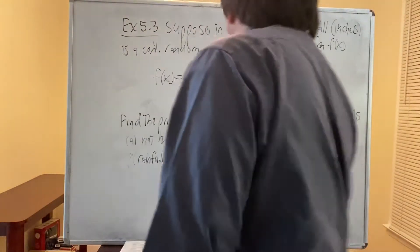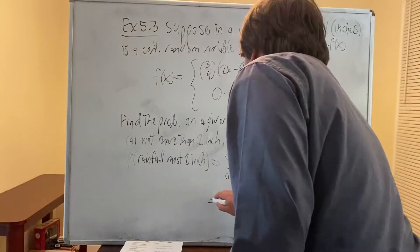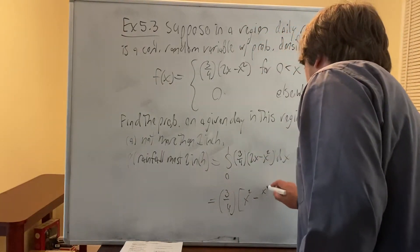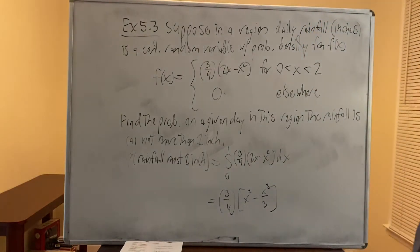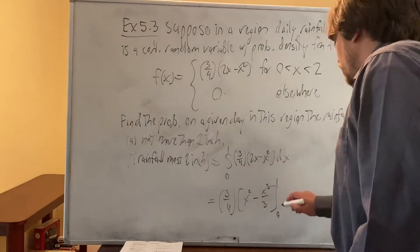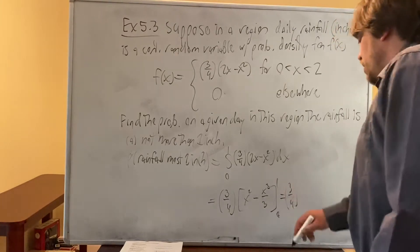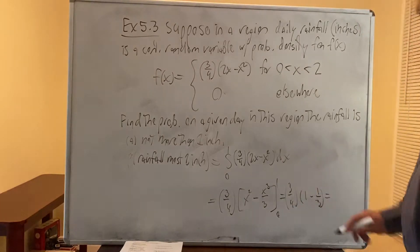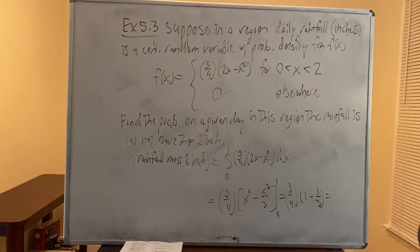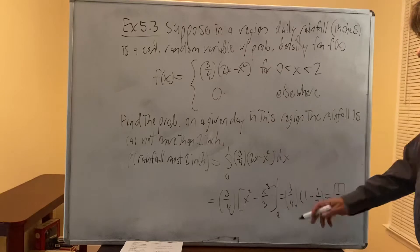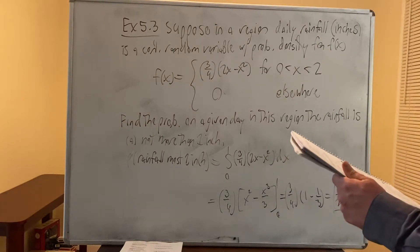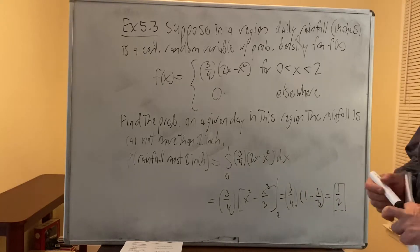Moving (3/4) outside the integral, we take the antiderivative: x² - x³/3, evaluated from 0 to 1. Plugging in 0 gives 0; plugging in 1 gives 1 - 1/3 = 2/3. Then (2/3)(3/4) = 2/4 = 1/2. So the probability the rainfall is at most one inch is 1/2, or 0.5.